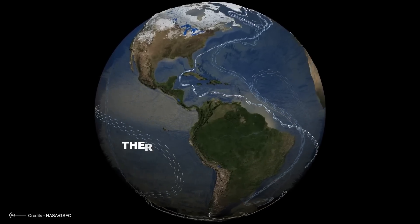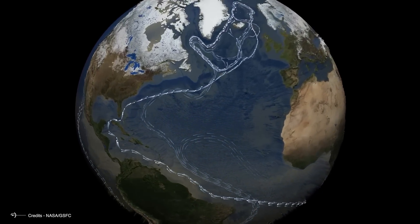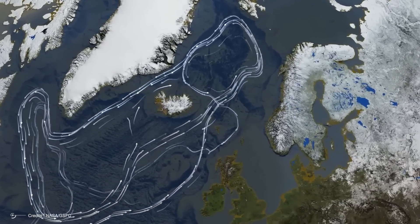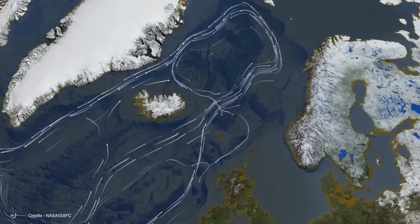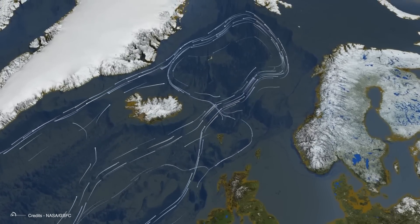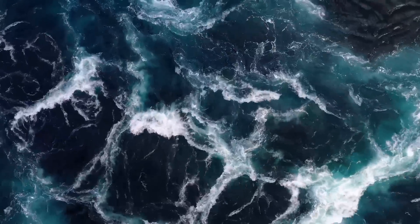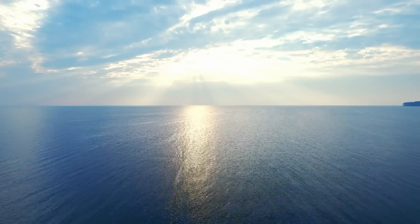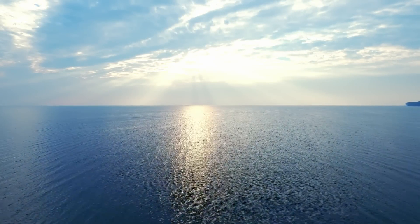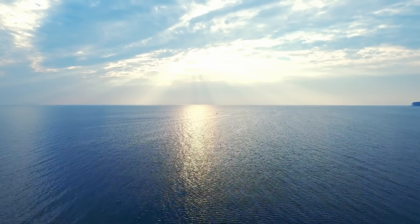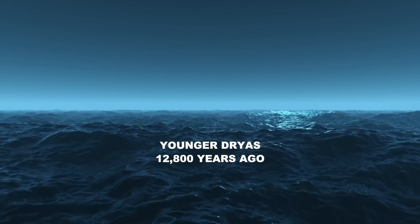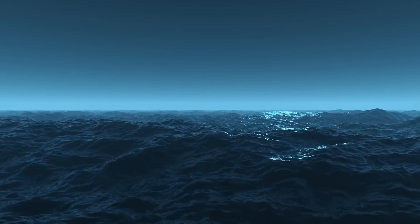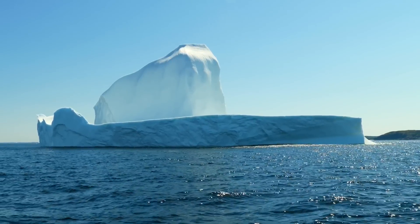Thermohaline circulation is a global ocean circulation generated by differences in the density of water due to temperature and salinity variations. Changes in this circulation — such as weakening or interrupting the flow of dense waters sinking into the North Atlantic — could significantly alter the global climate. Disruptions in the thermohaline circulation are thought to have contributed to episodes of rapid cooling in the Northern Hemisphere during the last ice age. During the Younger Dryas, approximately 12,800 years ago, an abrupt cooling occurred in the North Atlantic due to the disruption of the thermohaline circulation, probably caused by a large influx of fresh water from melting glaciers.